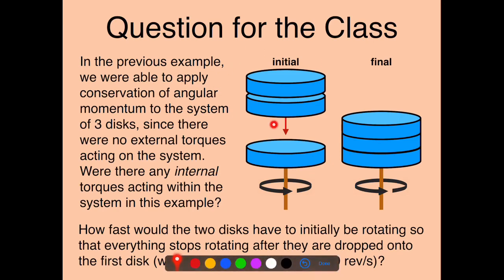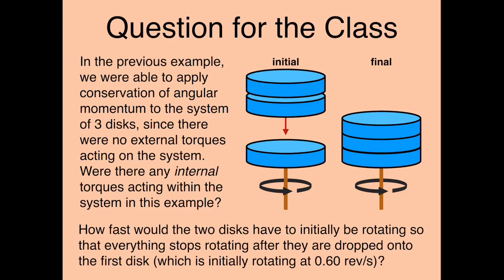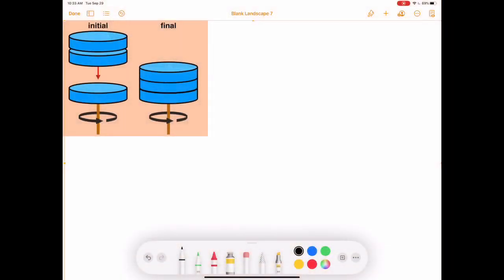Imagine that the two discs we drop onto the first are not stationary but are actually rotating. How fast would they have to be rotating to bring everything to a stop in the final state? To answer the first question: are there any internal torques? Yes, there are internal torques — those would be the torques due to friction between the discs as they grind against each other.